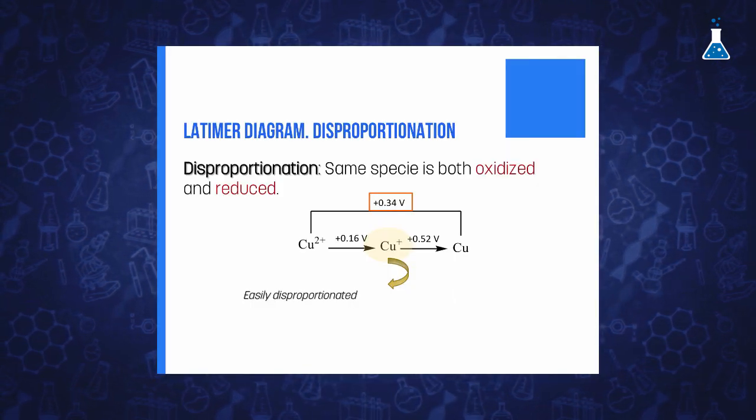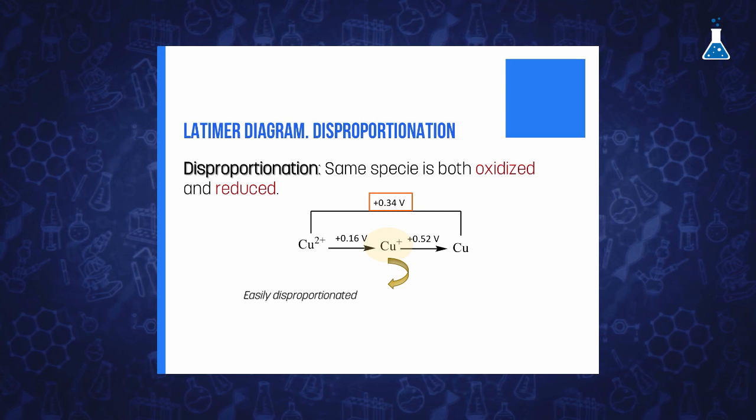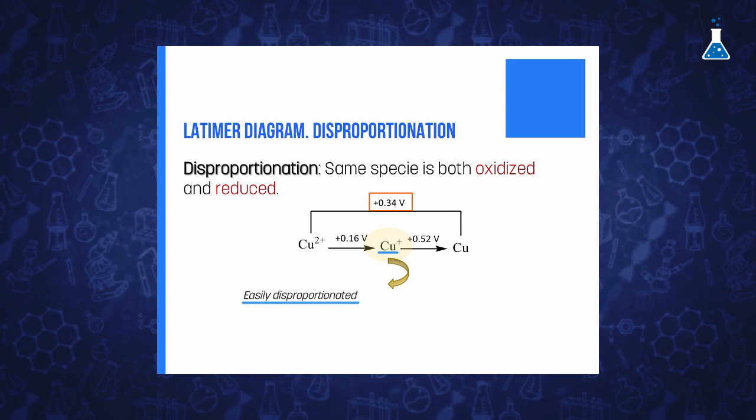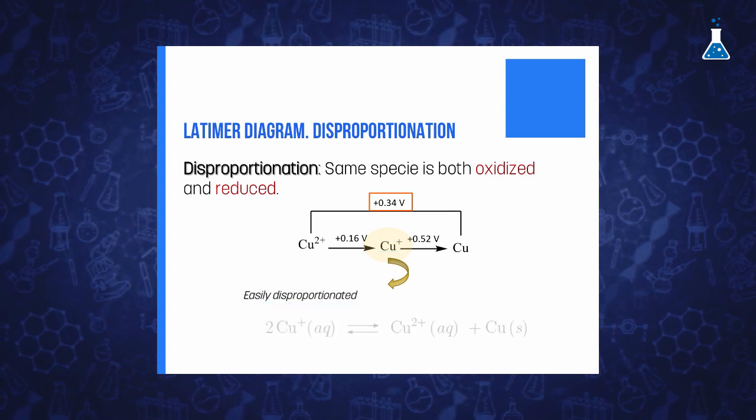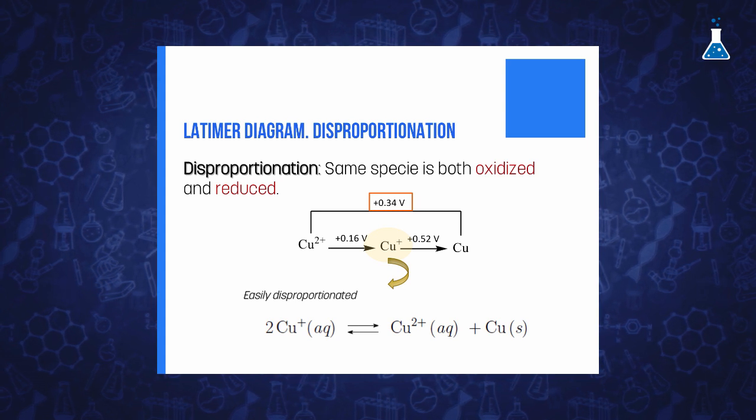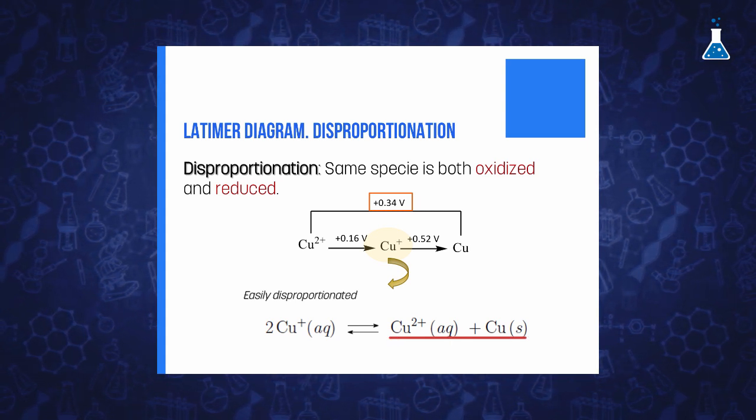We can observe that for the Latimer diagram of copper, the disproportionation of copper 1+ is clearly favored. In addition, the previous diagram for copper shows the standard potential of two non-adjacent species such as copper 2+ ion and copper metal.